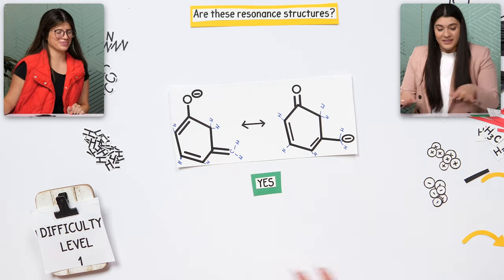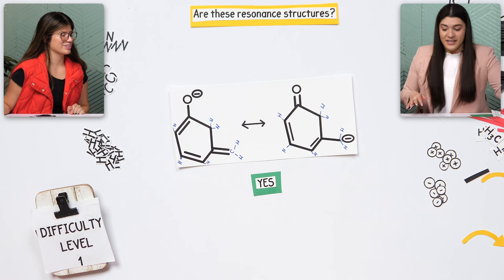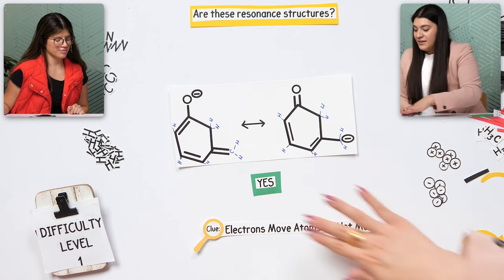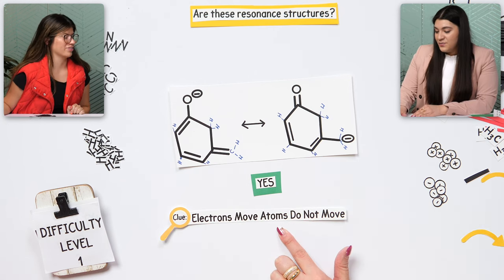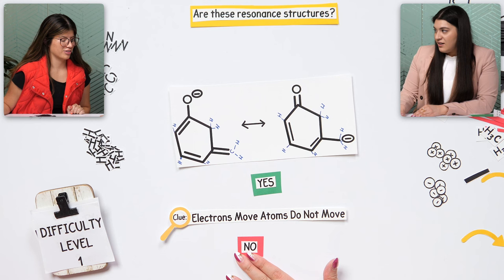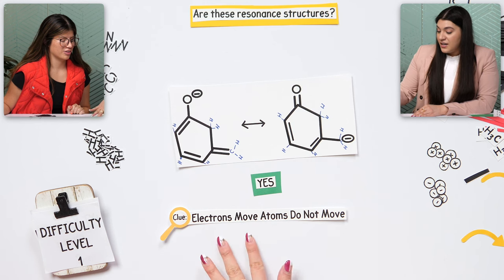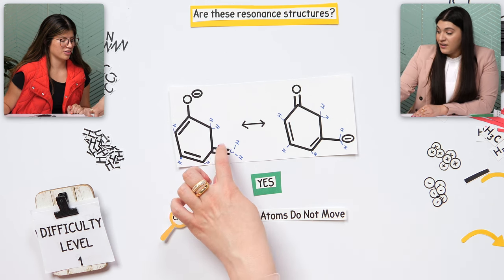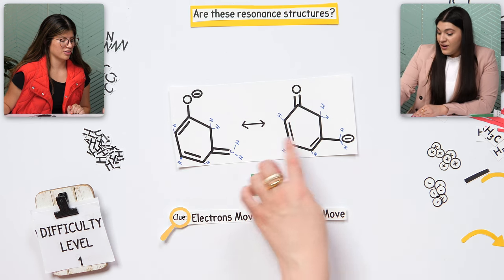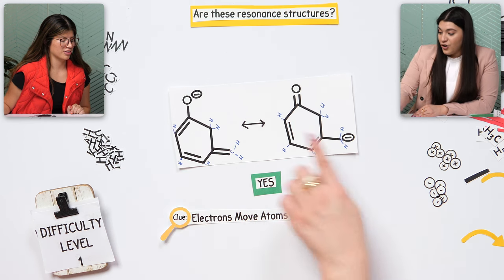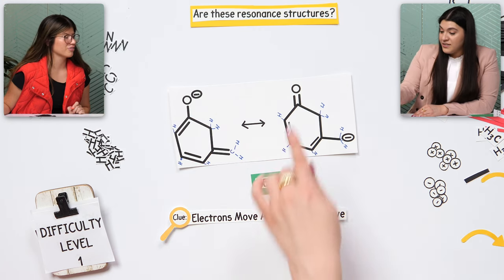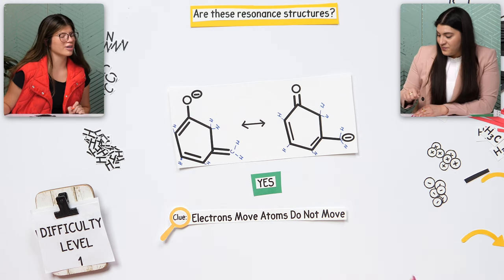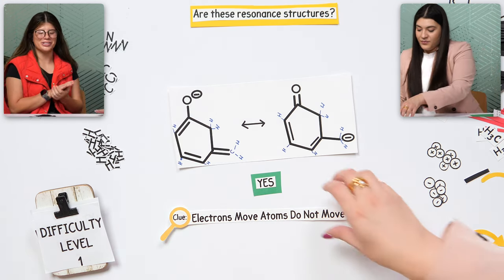That's the main thing — we're going to keep going with this. If the atoms moved, it is not a resonance structure. If just the electrons moved — the bonds or any charges — then yes, it is a resonance structure.